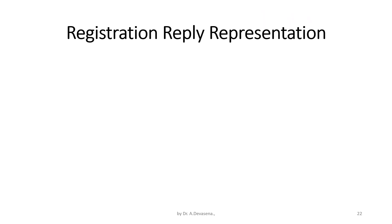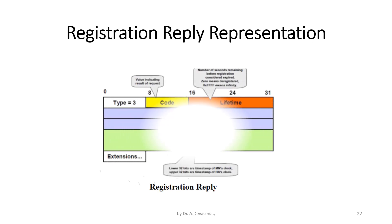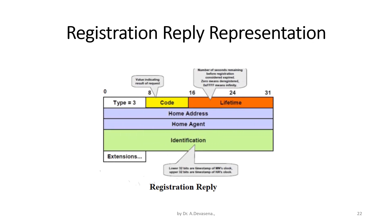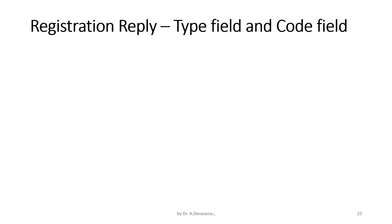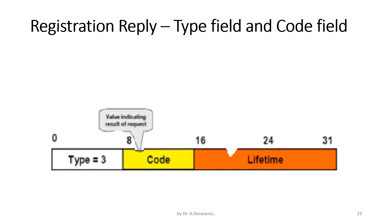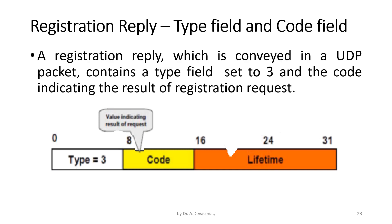The registration reply representation is shown with the help of a small diagram. The type field and code field are present in the registration reply. A registration reply, conveyed in a UDP packet, contains a type field set to 3 and a code field indicating the result of the registration request.